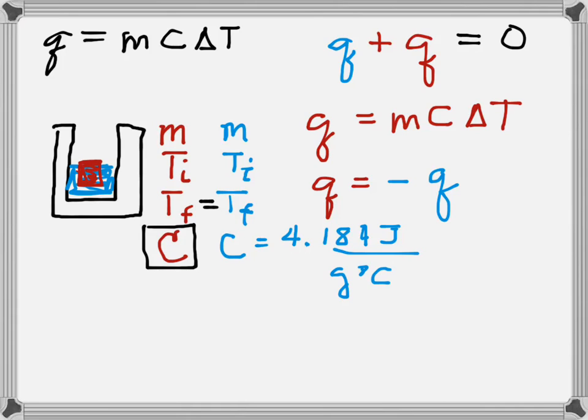For the water, Q equals MC delta T. We know all of these values. We measure them. We measure the mass of the water, we know what the specific heat capacity is, we know what the final and the initial temperatures are, and so we calculate what Q is. Then we just change the sign, and that gives us the Q for the hot metal.